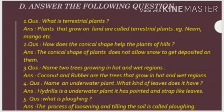Now you have to open your notebook and write the chapter name: Plants Around Us. Write the date and CW. Then write Part D: question answers. You have to write the question with black pen and write the answers with blue gel pen.